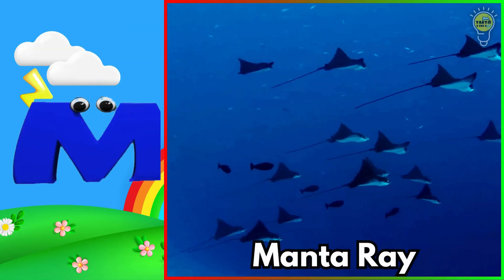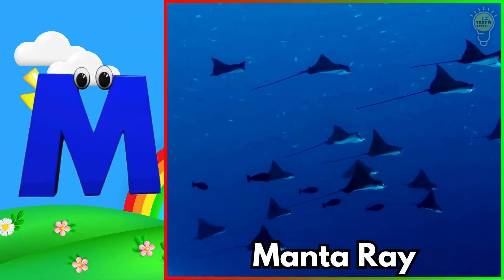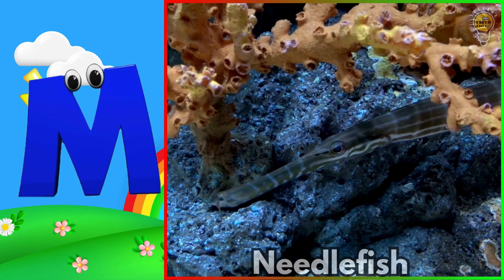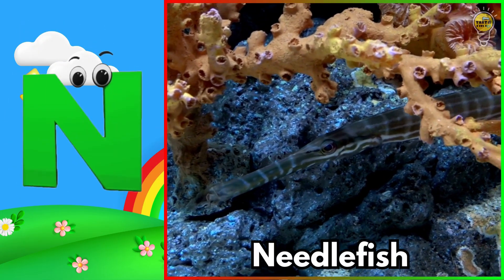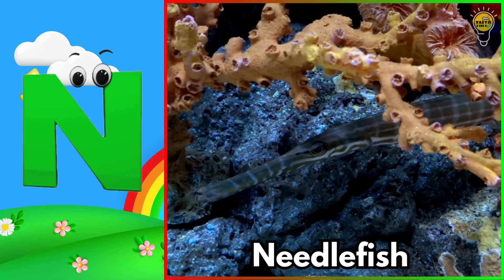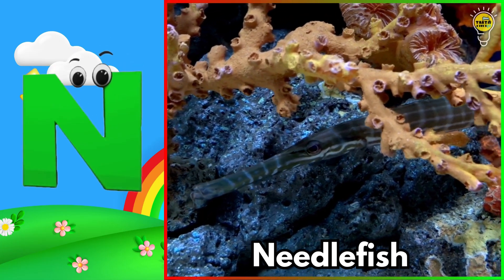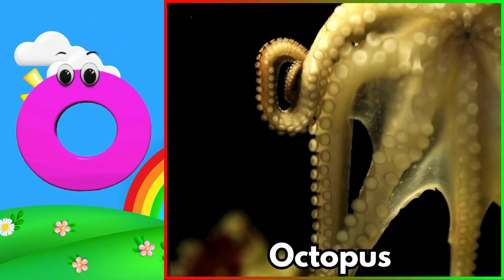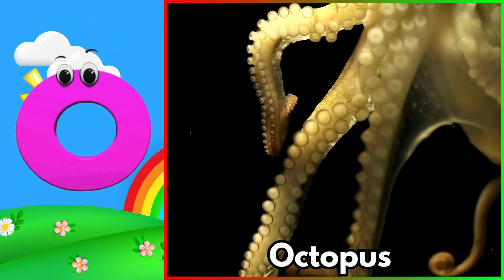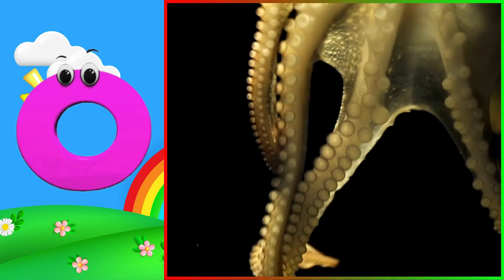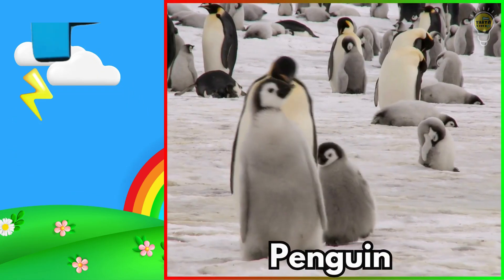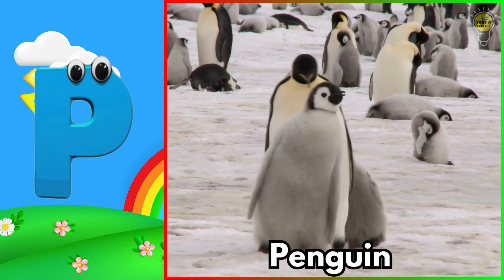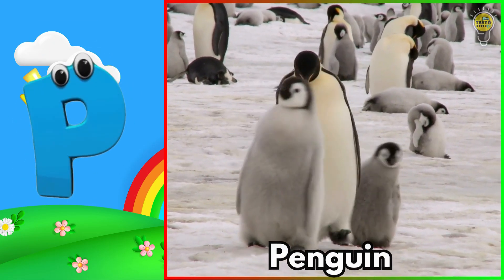M is for manta ray. Muh, muh, manta ray. N is for needlefish. Nuh, nuh, needlefish. O is for octopus. O, o, octopus. P is for penguin. Puh, puh, penguin.